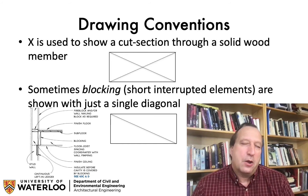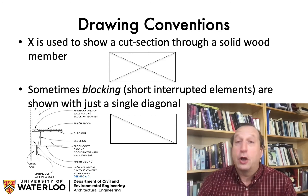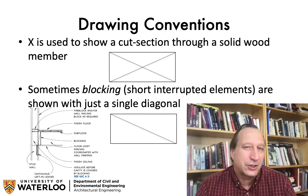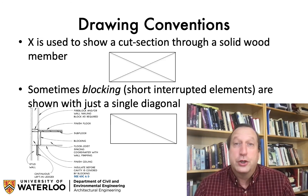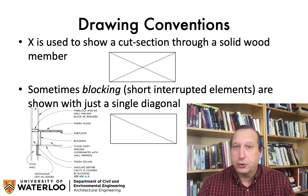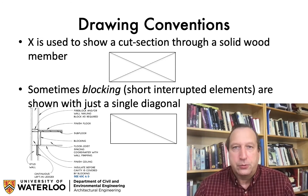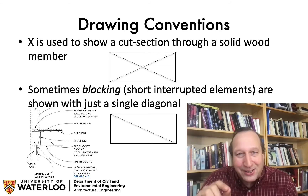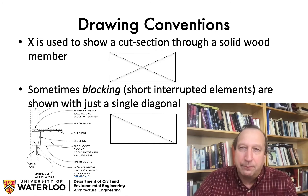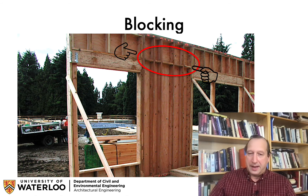Not all pieces of wood continue for a long distance past the section cut, like a plate or stud would. Sometimes we use short chunks of wood called blocking. If it is blocking that you're cutting through, you only put one line rather than an X. So an X indicates a continuous structural member, while a single line indicates blocking.